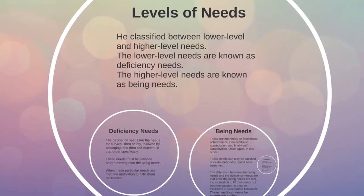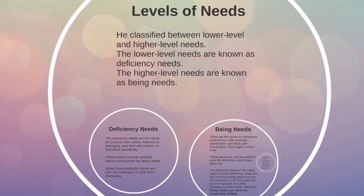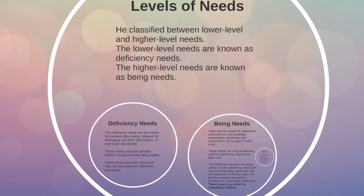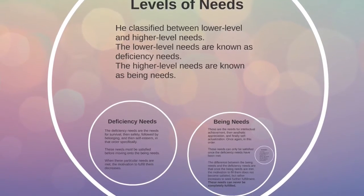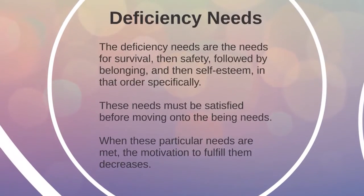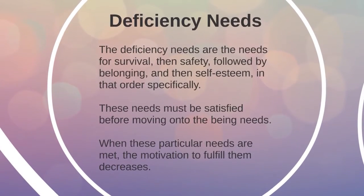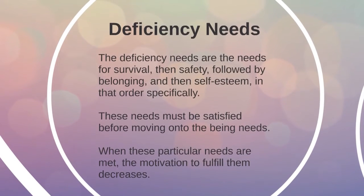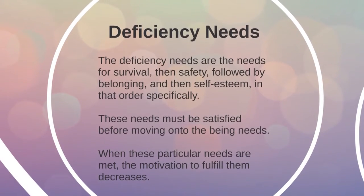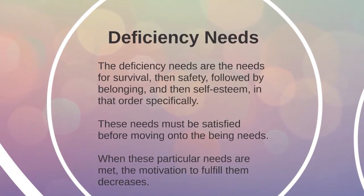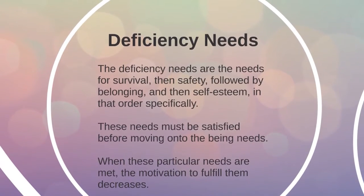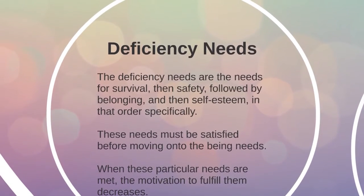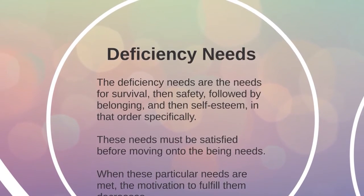Maslow identified lower level needs in the hierarchy as deficiency needs and higher level needs as being needs. Deficiency needs are required to survive, feel safe, have a sense of belonging, and gain self-esteem. Once these needs have been met, the motivation to fulfill them lessens, and then the individual may move on to fulfilling being needs.